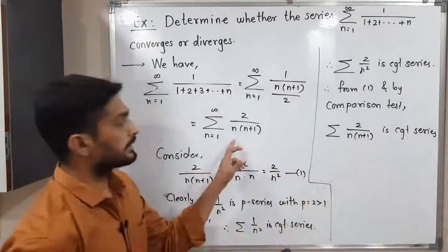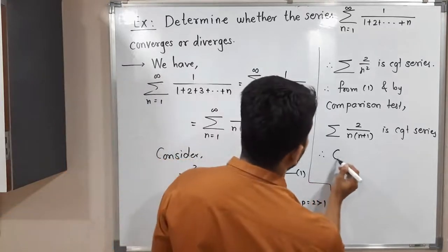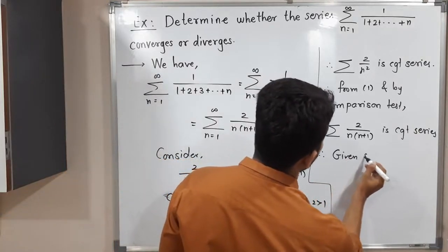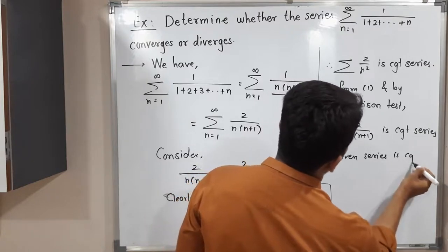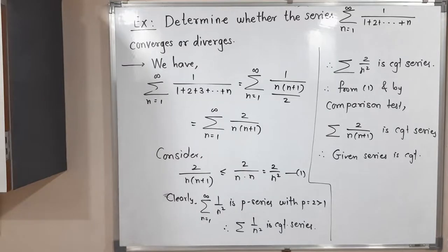This is a convergent series and this is nothing but the given series. Therefore the given series is convergent. In this way we proved the given series is convergent. Make a screenshot of it. Thank you, bye bye.